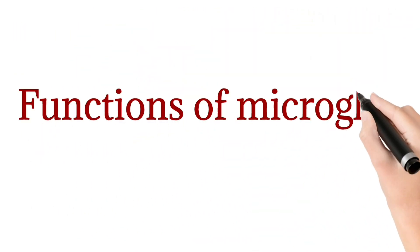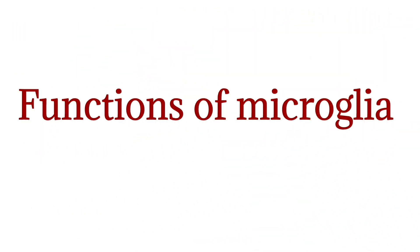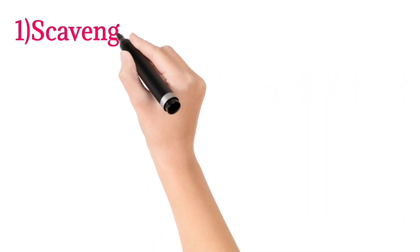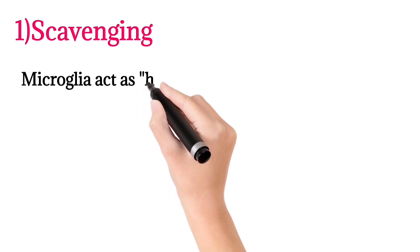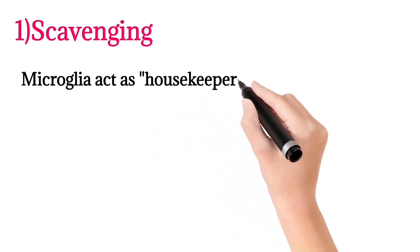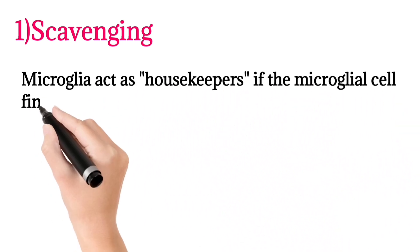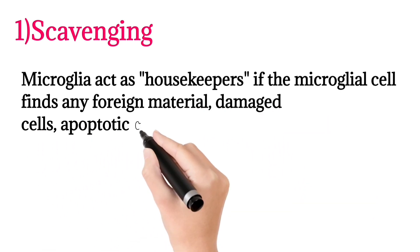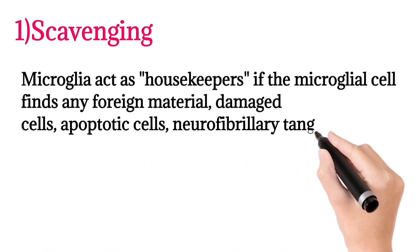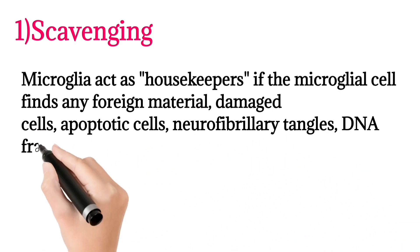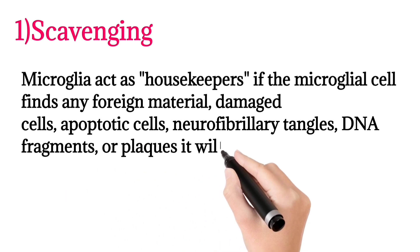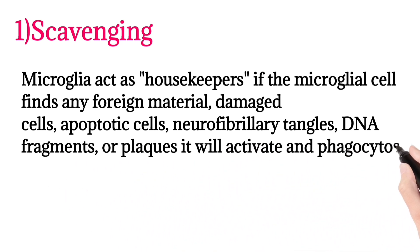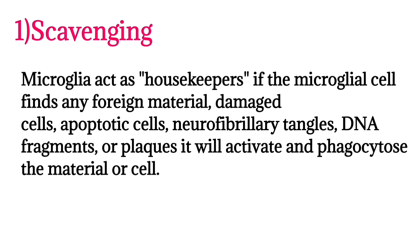The first function of microglia is scavenging. Microglia act as housekeepers of the brain. When a microglial cell finds any foreign material, damaged cells, apoptotic cells, neurofibrillary tangles, or DNA fragments, it becomes activated and phagocytoses that material or those cells.